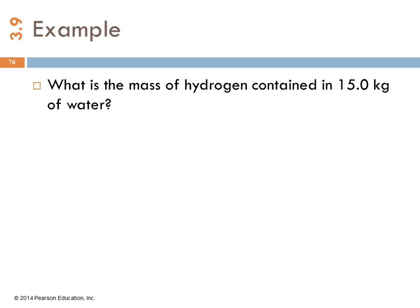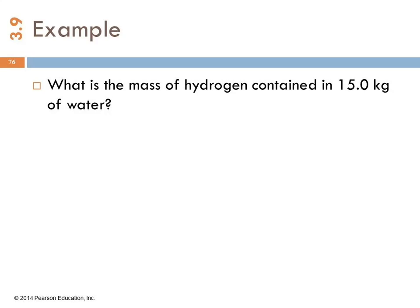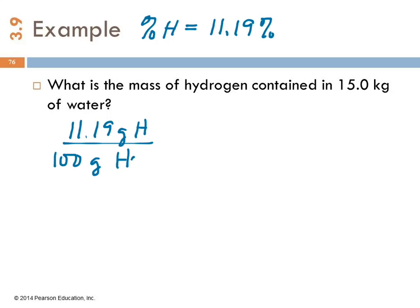So what is the mass of hydrogen contained in 15.0 kilograms of water? The percent hydrogen was 11.19 percent, right? We calculated that already. So that is a fabulous little conversion factor, 11.19 grams of hydrogen per hundred grams of water. So if we have 15 kilograms of water, that's the number that we're given to start with, and we want to find mass of hydrogen.